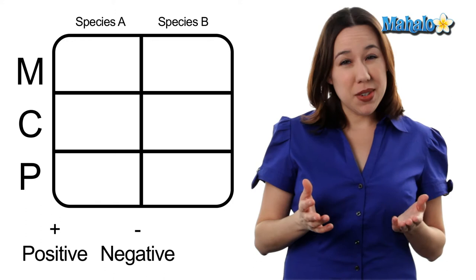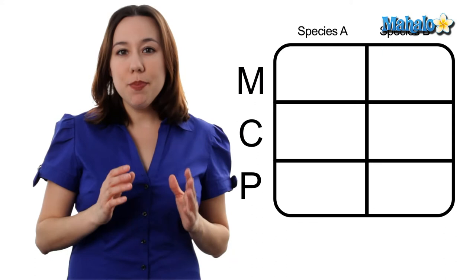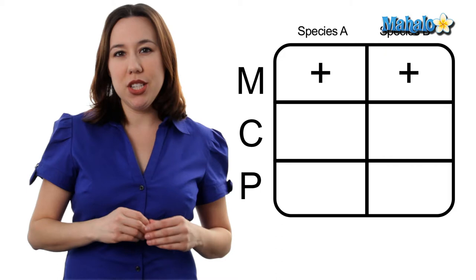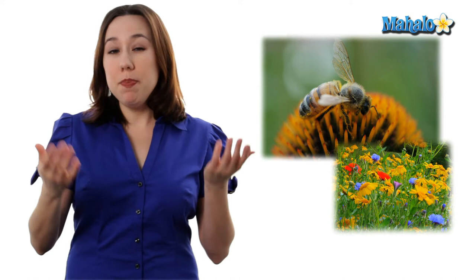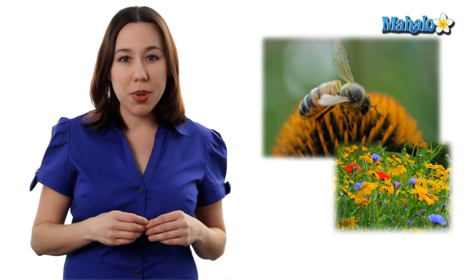Let's start with mutualism. Mutualism is an interspecific interaction between two unrelated species that both species are going to benefit. Let's use the example of bees and flowers. Bees are going to get pollen and nectar in order to survive, and flowers benefit by getting the bees to pollinate themselves as well as taking genetic information from other individual plants.